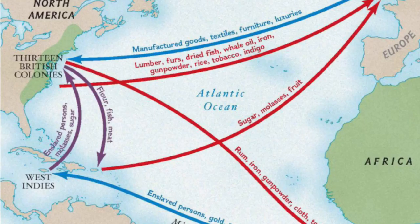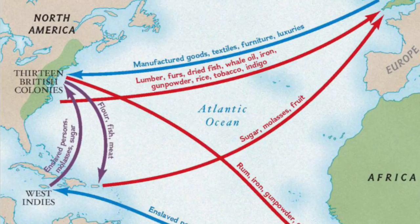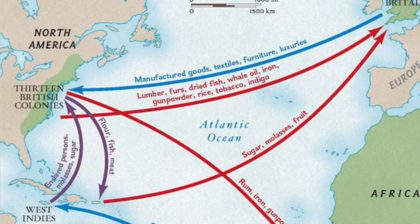In basketball and in most sports, one finds routes around defensive players. In this case, this represents the European nations finding roots into the Americas and establishing the Southern, Mid-Atlantic, and New England colonies for the main goal of mercantilism and the growth of the empire.